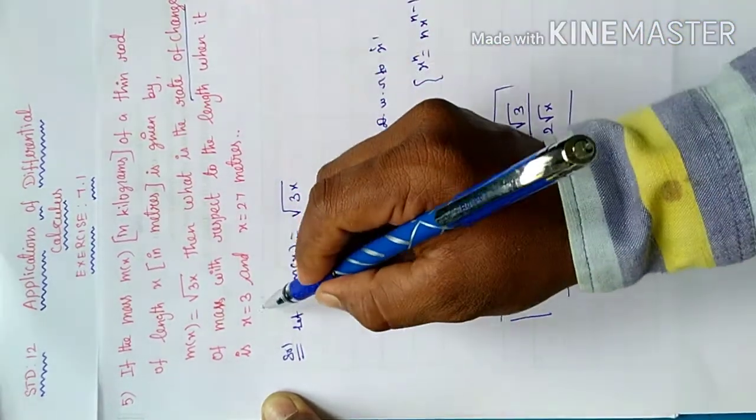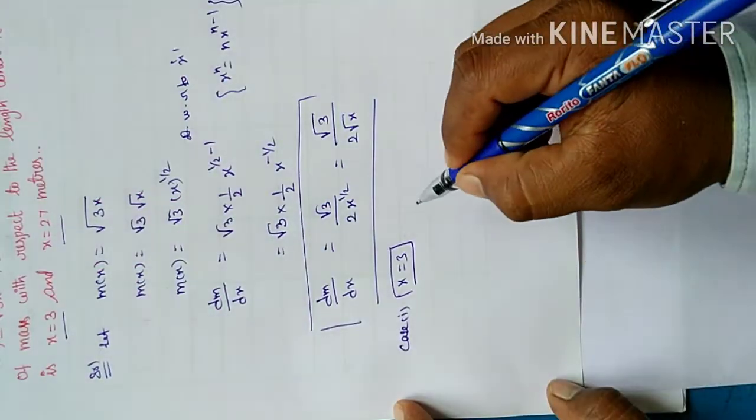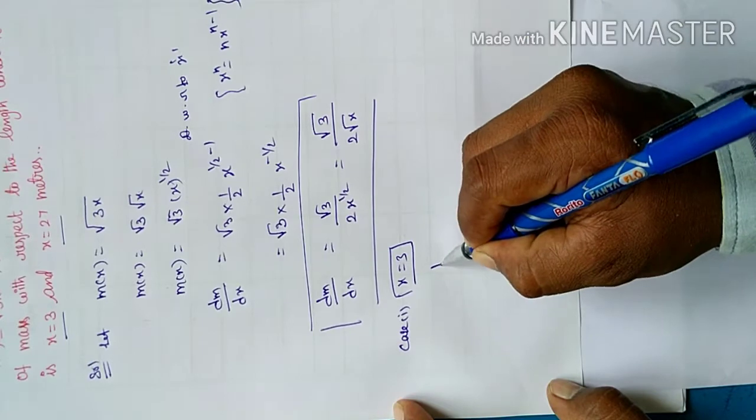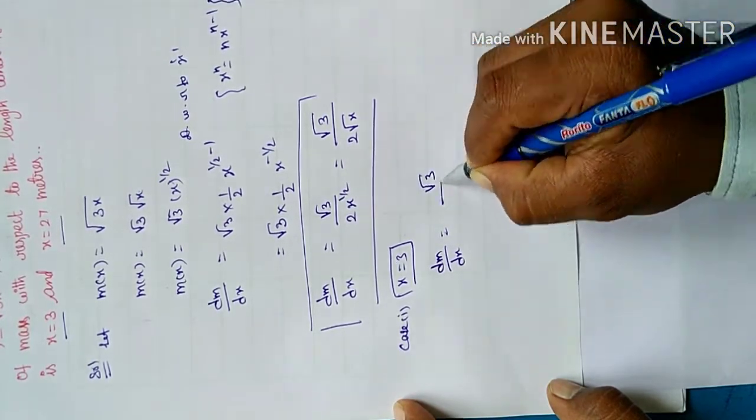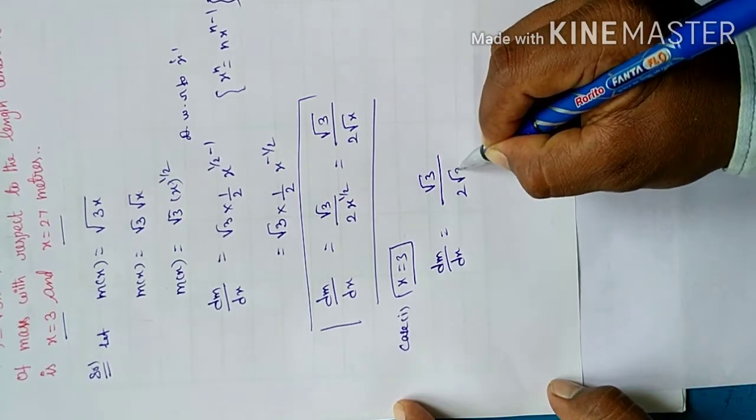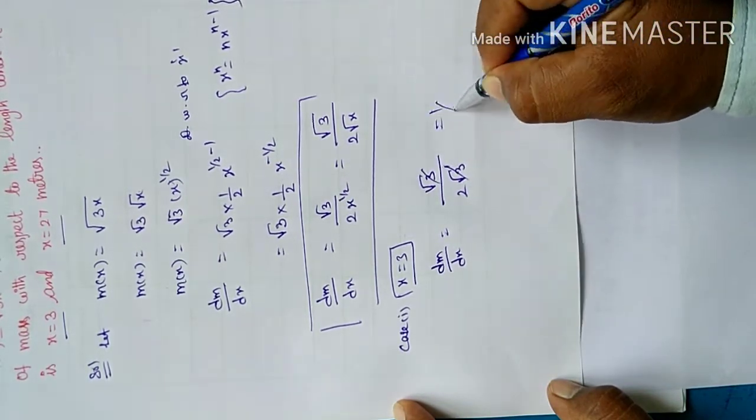dm by dx, x equal to 3. First case, apply. dm by dx root 3 by 2 into root 3. Root 3 by 2 root 3 grams per meter.